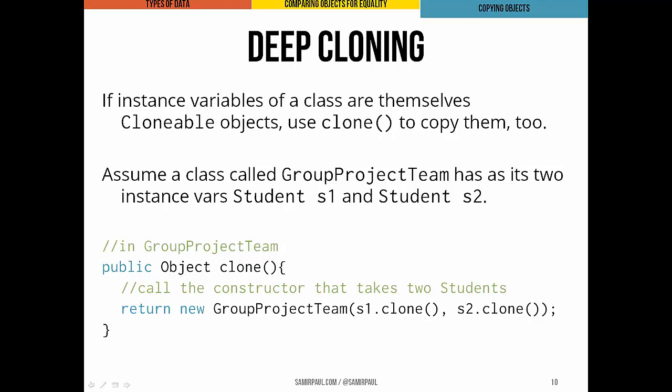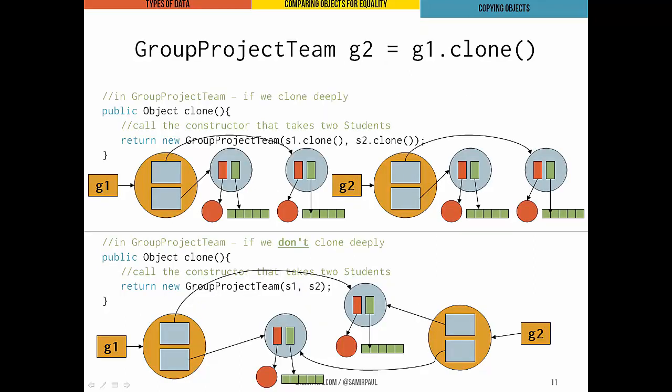We call this deep copying or deep cloning, and it can help save us from a whole bunch of errors. Suppose we have a class called GroupProjectTeam with two instance variables s1 and s2. Its clone method would return a new GroupProjectTeam object, taking s1.clone() and s2.clone() as parameters — actually cloning s1 and s2 for the new object. With effective deep cloning, the new object's instance variables point to clones of s1 and s2, not the originals inside g1.